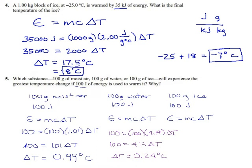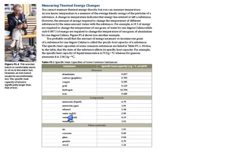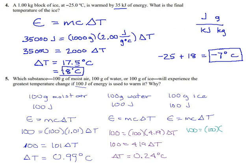One more time for ice. We're still putting in 100 joules, the mass is still 100 grams, and the specific heat for ice — water solid — is 2.00. So 100 equals 100 times 2, which is 200 delta T. Dividing by 200, we get delta T is exactly half a degree — 0.5 degrees Celsius.